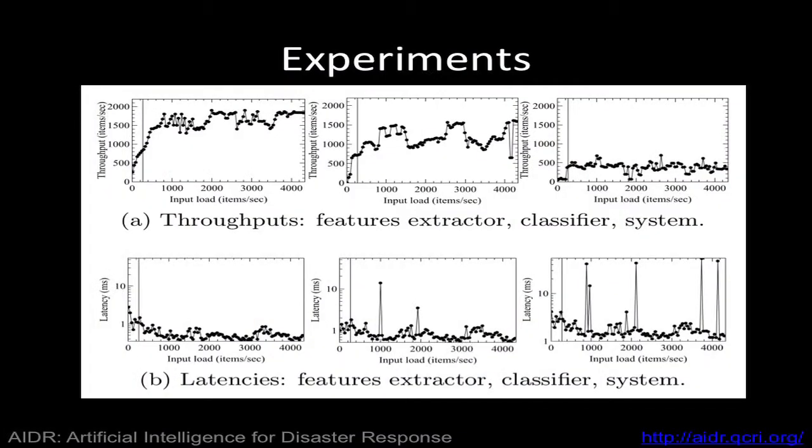In our experiments, we have seen that we can scale up to three or four times the peak data observed historically, so we can handle maybe 500 or 700 tweets per minute at the same level of quality as usual.